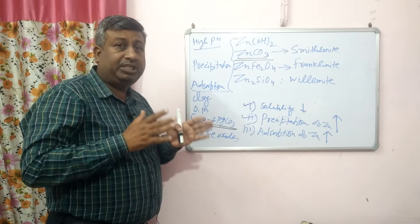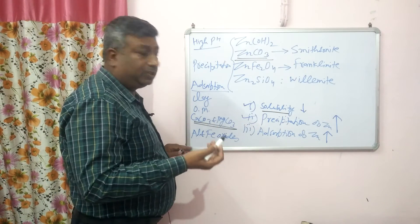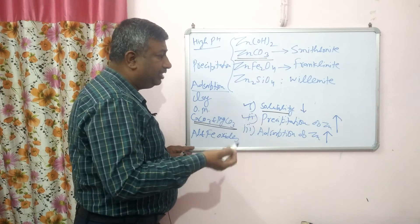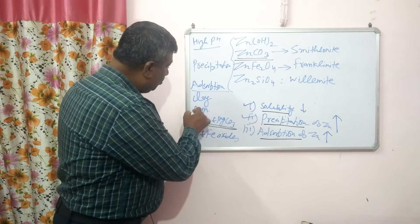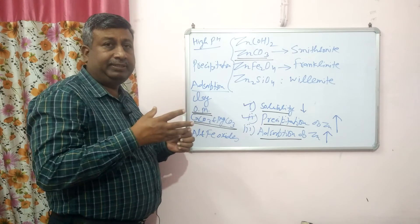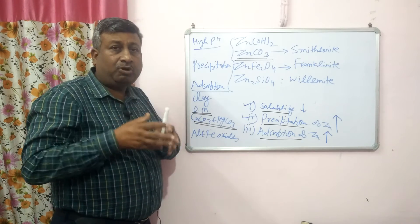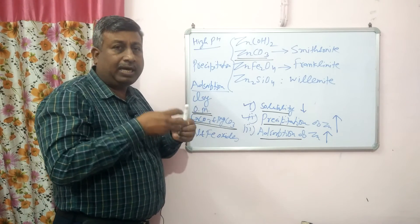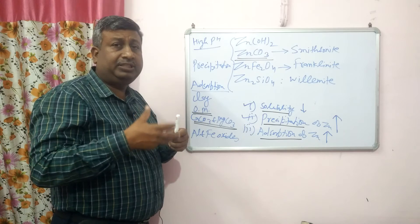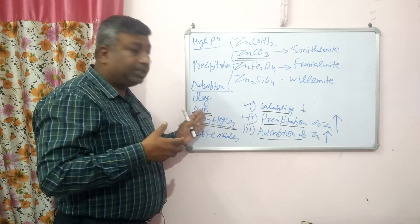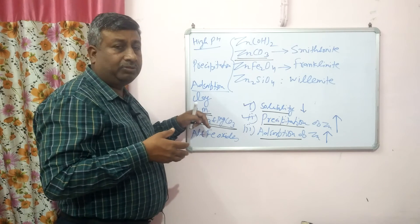So pH influences zinc availability through three reasons: the solubility factor, because hydrolytic species such as ZnOH⁺, Zn(OH)₂, and Zn(OH)₃⁻ form; then precipitation; and adsorption. In high organic matter soils, zinc is also adsorbed on organic matter and forms tight chelate complexes, reducing zinc availability. In calcareous soils, zinc is both precipitated as zinc carbonate and adsorbed on calcium and magnesium carbonate.